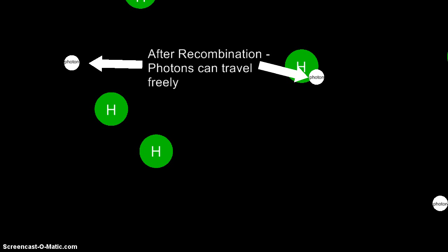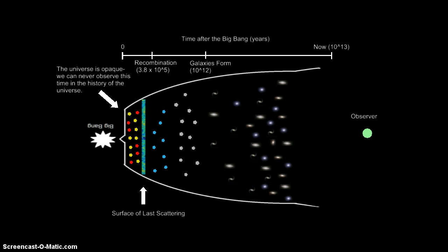As we look out into the universe, we are actually looking back in time. Light from an object that is 3 million light years away, such as the Andromeda galaxy, will take 3 million years to reach us, meaning that we are seeing the object as it was 3 million years ago. This principle means that we can actually look out into the universe and observe the last scattering.